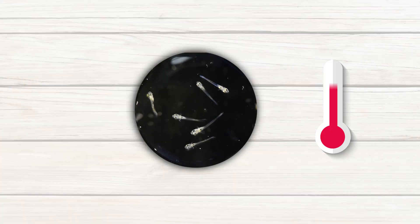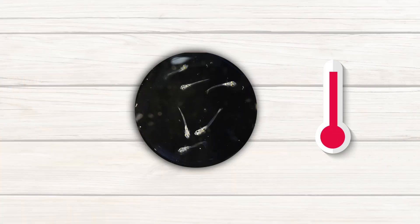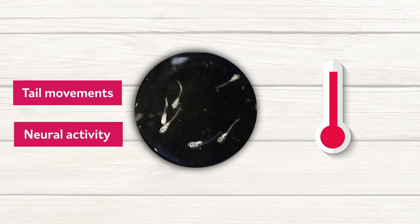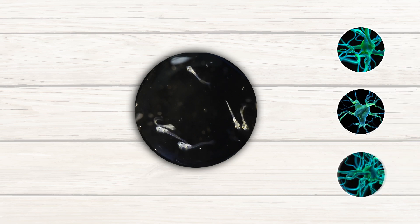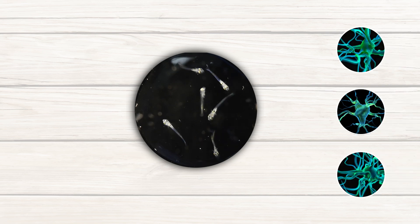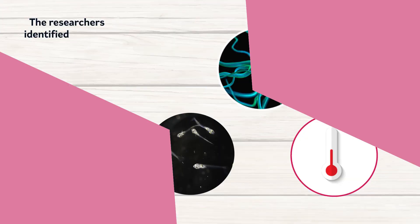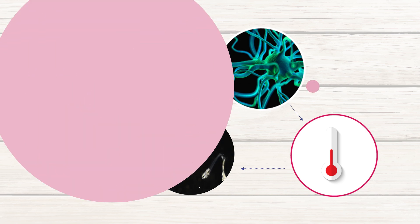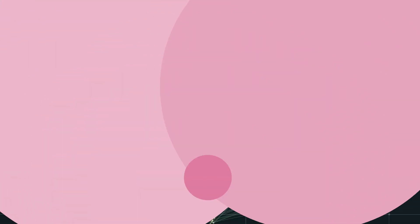The researchers changed the temperature of larval zebrafish under a microscope while recording their tail movements and neural activity. The MINE framework allowed the team to characterize neurons based on their receptive field and how complex their computations are. In addition, the researchers identified neurons that link the temperature that zebrafish sense with their own ongoing behavior.